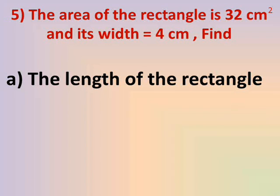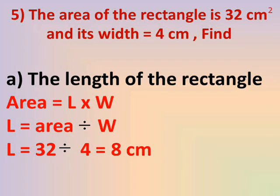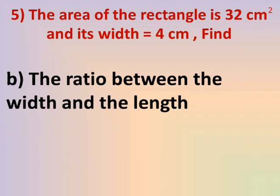Number 5: The area of the rectangle is 32 cm² and its width is 4 cm. Find number A — the length of the rectangle. The area of a rectangle equals length × width. To find the length, we use: length = area ÷ width. So 32 ÷ 4 = 8 cm.